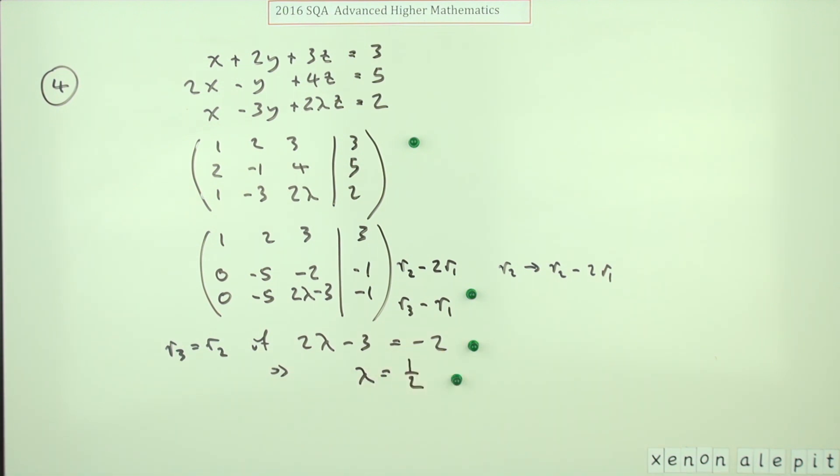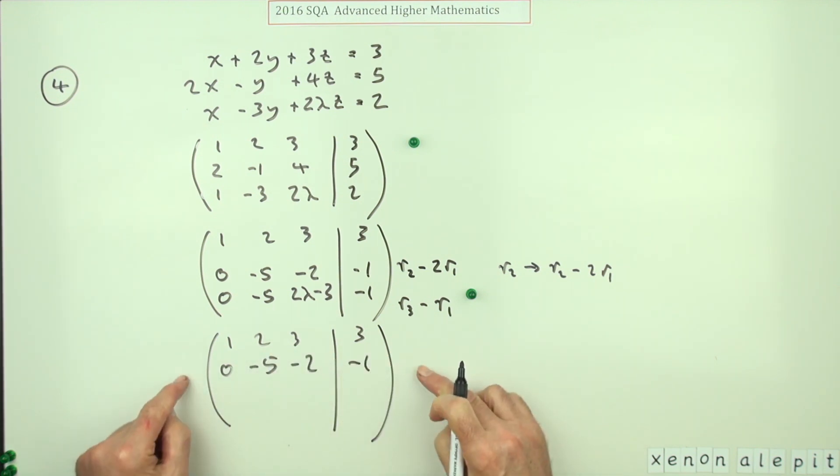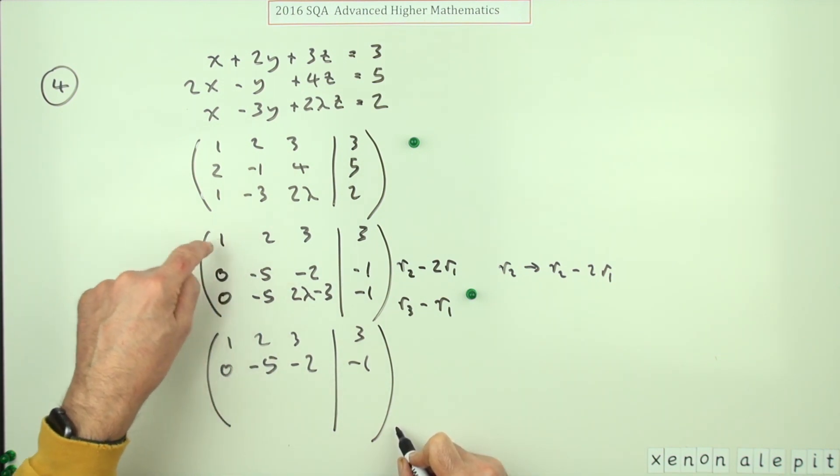There you go, four marks. However, you may well just have carried on to produce the third row having a zero in the middle. So I've still got one, two, three, three; zero, negative five, negative two, negative one. Or if I was doing that, I would probably use that opportunity just to reverse the signs in that row. But then to make this one into a zero, I can't use number one anymore because that would pop something back in here.